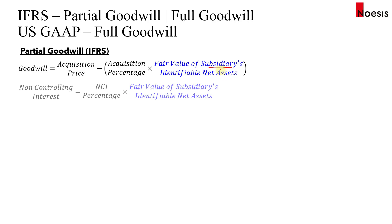The goodwill formula is: acquisition price minus the percentage acquired, multiplied by the fair value of the subsidiary's identifiable net assets. To compute the non-controlling interest, you take the NCI percentage — the minority ownership — and multiply by the fair value of the subsidiary's identifiable net assets. I'm highlighting this in blue because under full goodwill, a different basis is used to compute NCI.